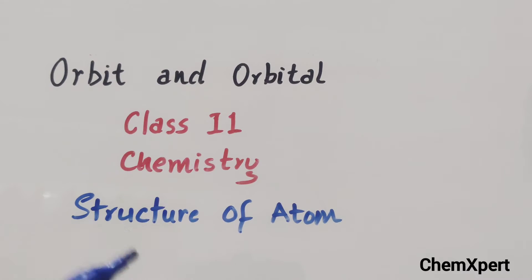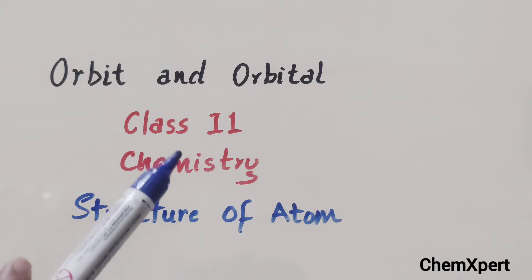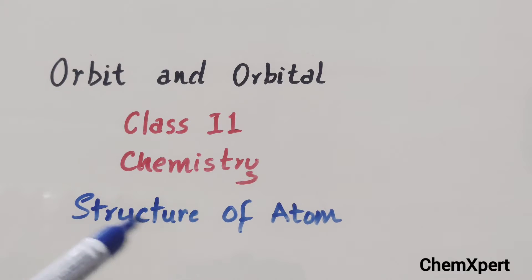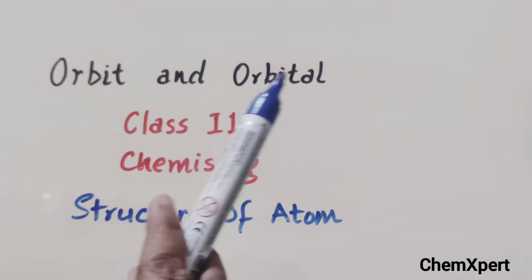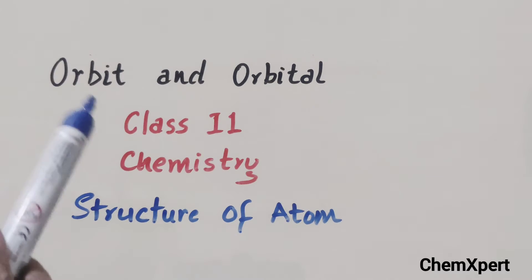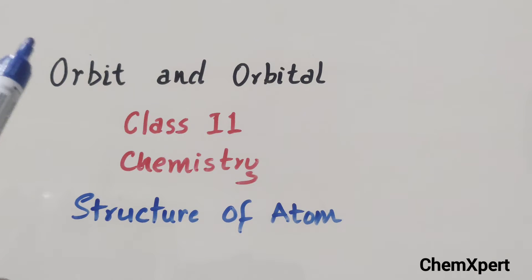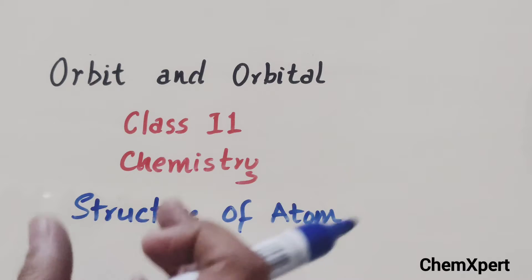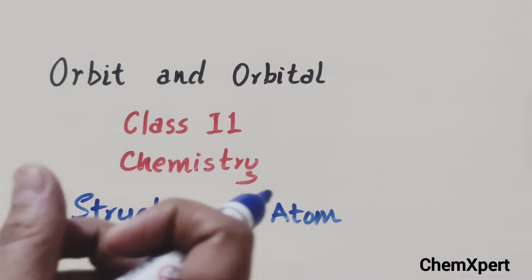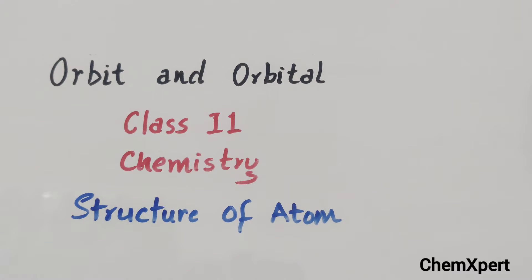Hello everyone. In this video we will discuss one of the important topics from Class 11th Chemistry, Chapter: Structure of Atom. The topic is orbit and orbitals — these are some basic definitions which students are not able to understand in their normal classroom session, so in this video we will discuss the important differences, definitions, and concepts of orbit and orbital.